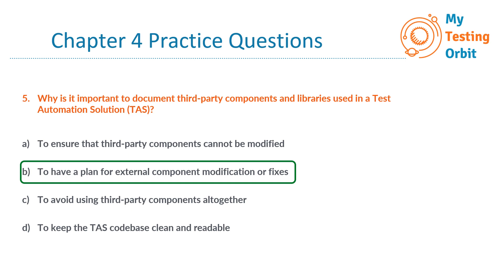Option A is incorrect — documentation is not about preventing modifications to third-party components, but about having a plan for addressing potential modifications. Option C, to avoid using third-party components altogether, is incorrect because it suggests avoiding their use entirely. Option D, to keep the TAS code base clean and readable, has a connection to the overall benefits of documentation, but it is more focused on general code base management and readability, making it not a suitable option for this question.